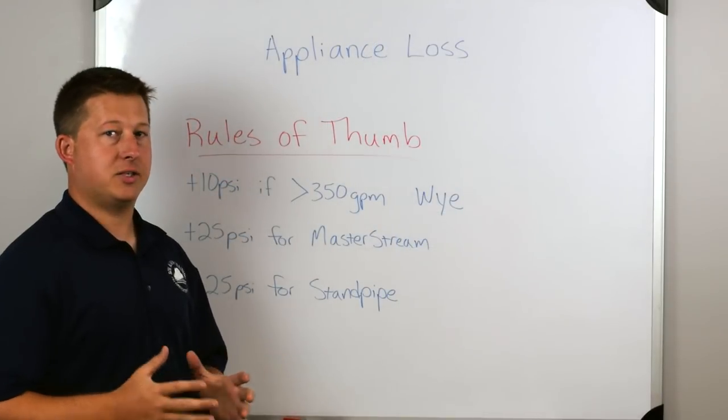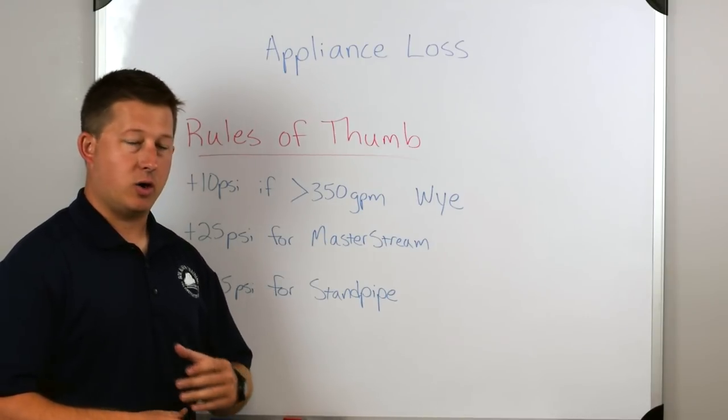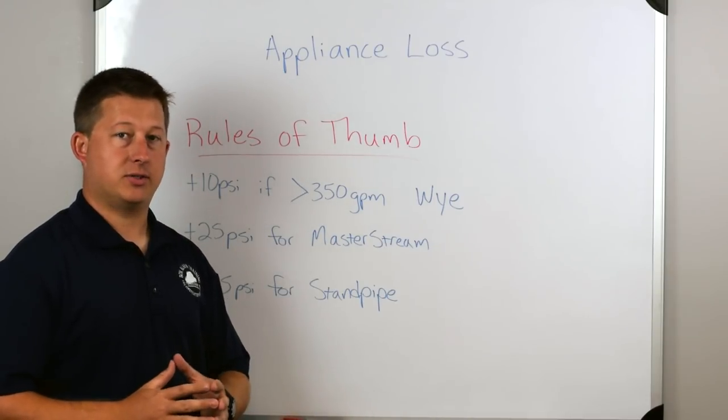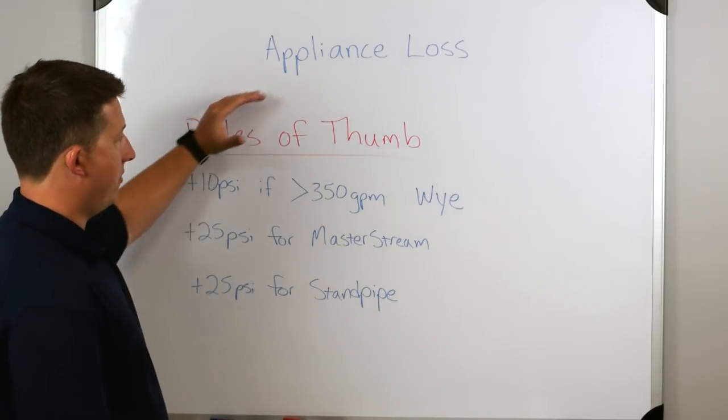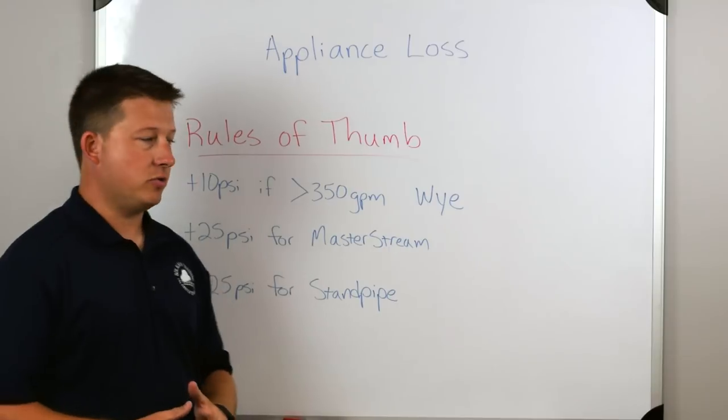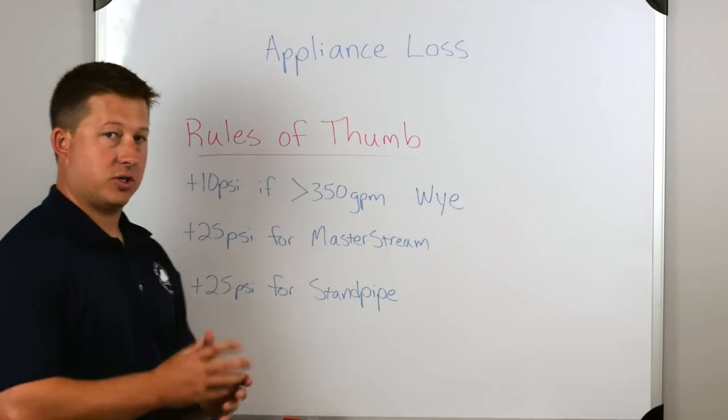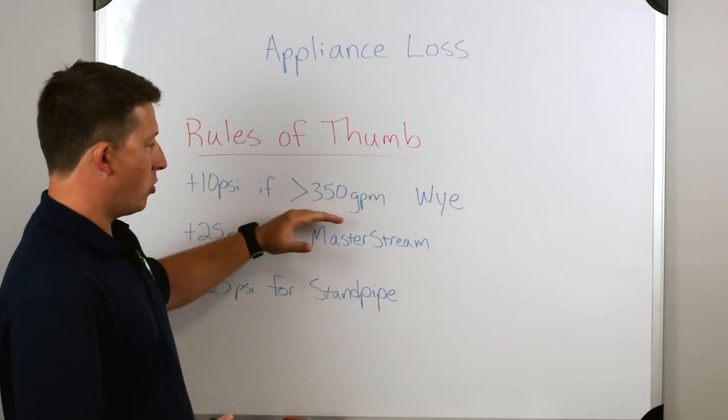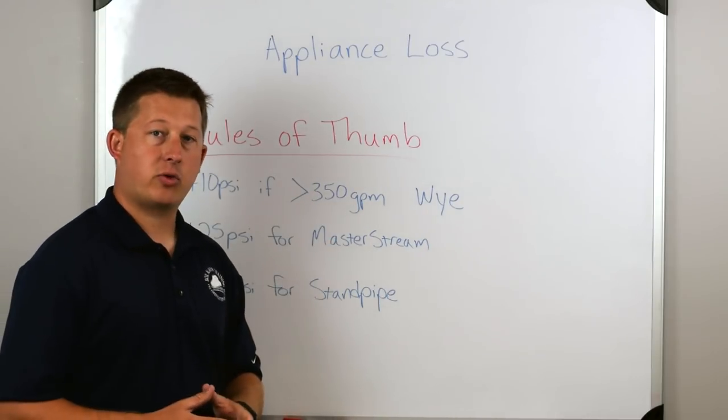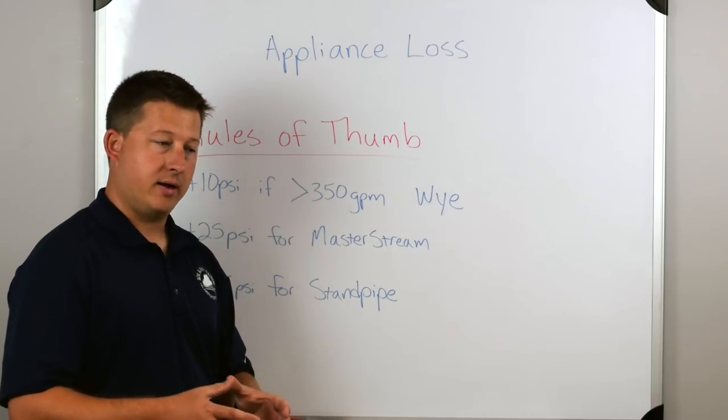Next, we're going to look at appliance pressure loss. That's when we're going to use an appliance within our hose lines or the way that we set up our lines or the way that we're fighting fire. So there's a few rules of thumb that we have when we use appliances. One of those is we add 10 PSI of friction. We add 10 PSI to our pump discharge pressure if we're moving more than 350 gallons per minute through a wye.